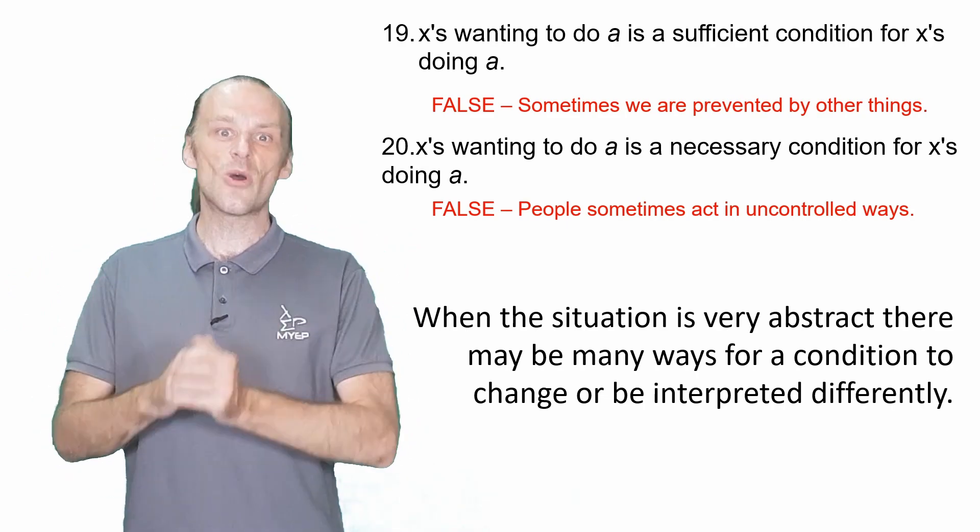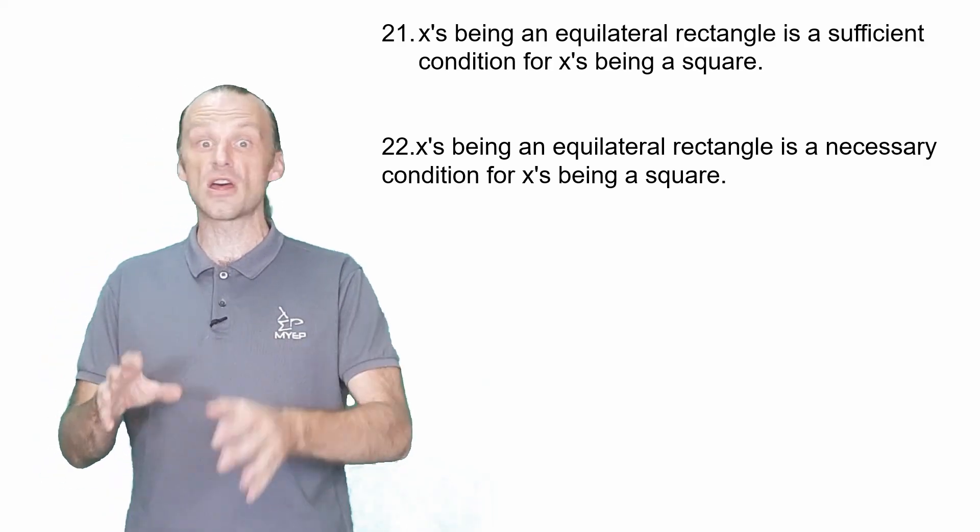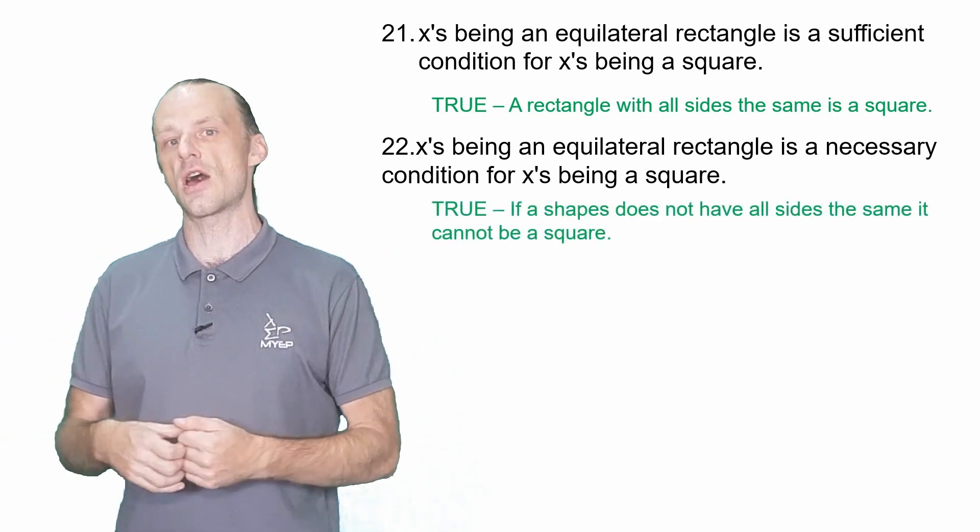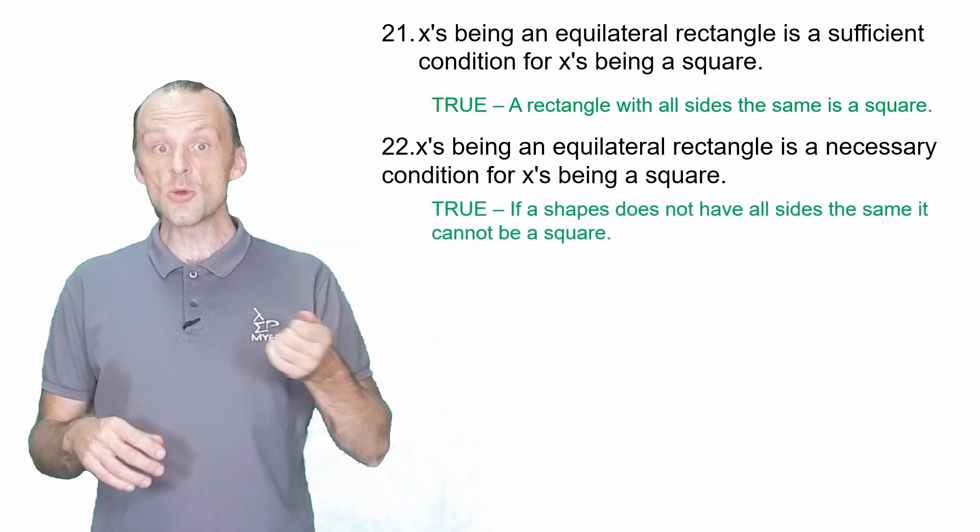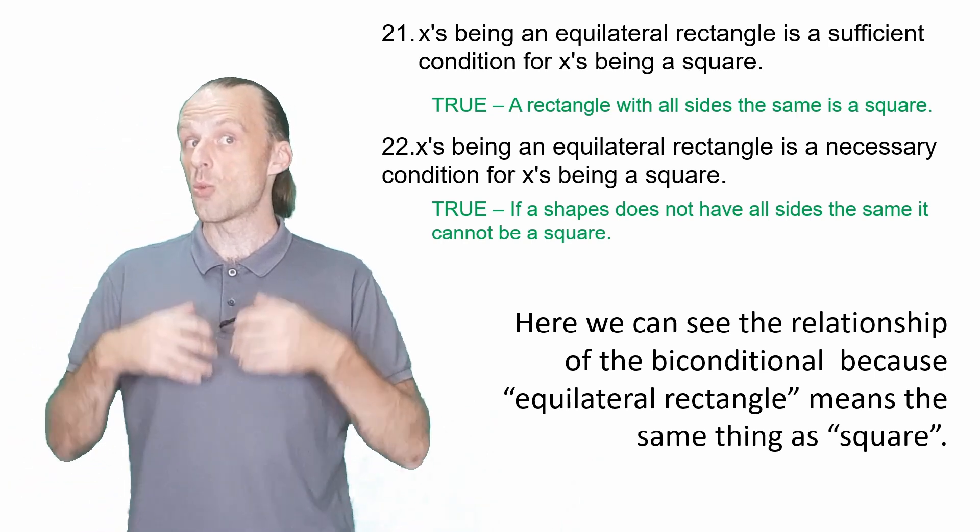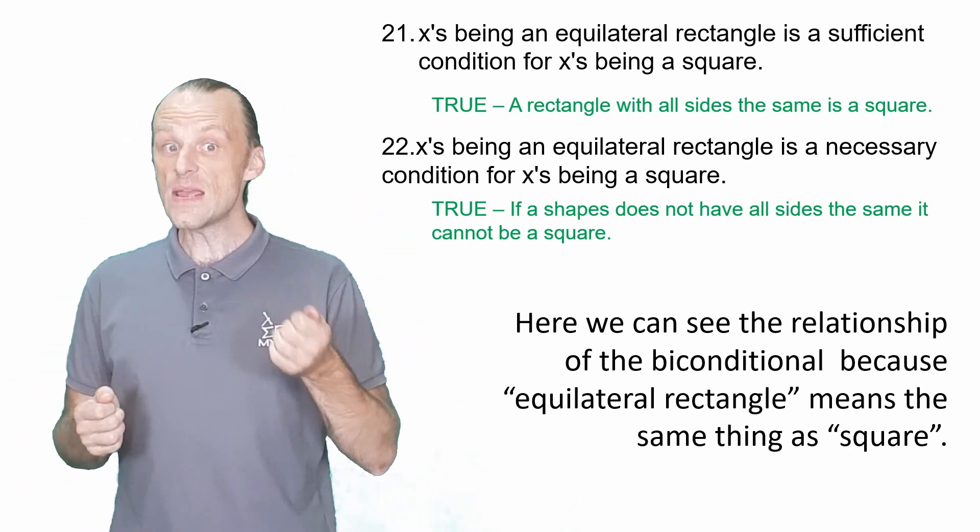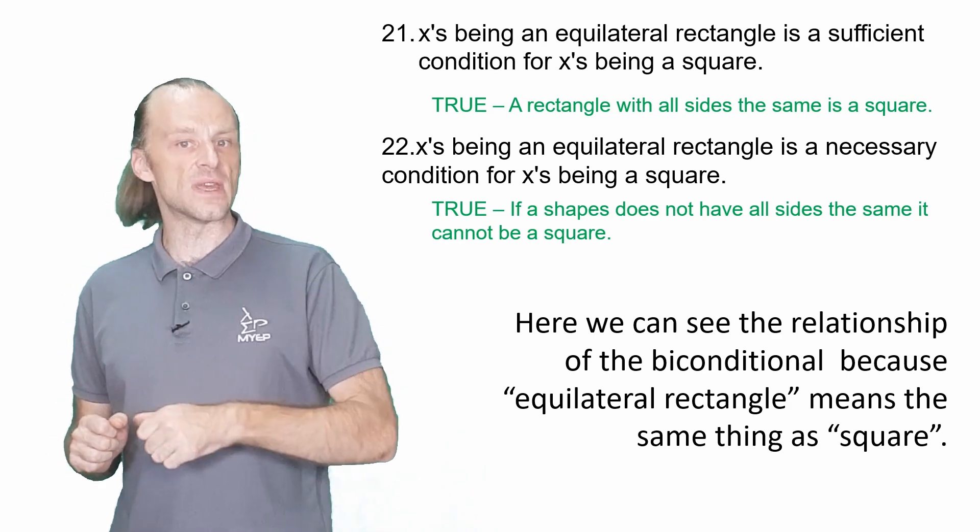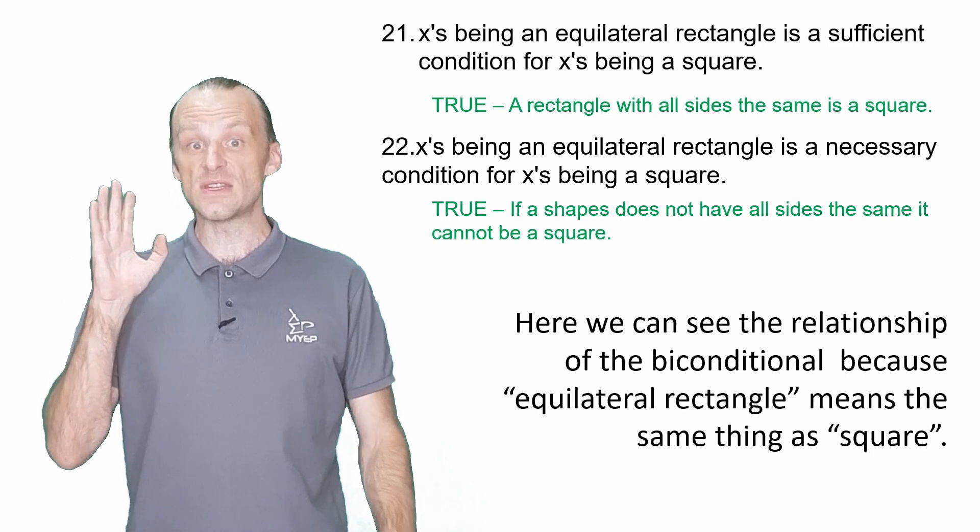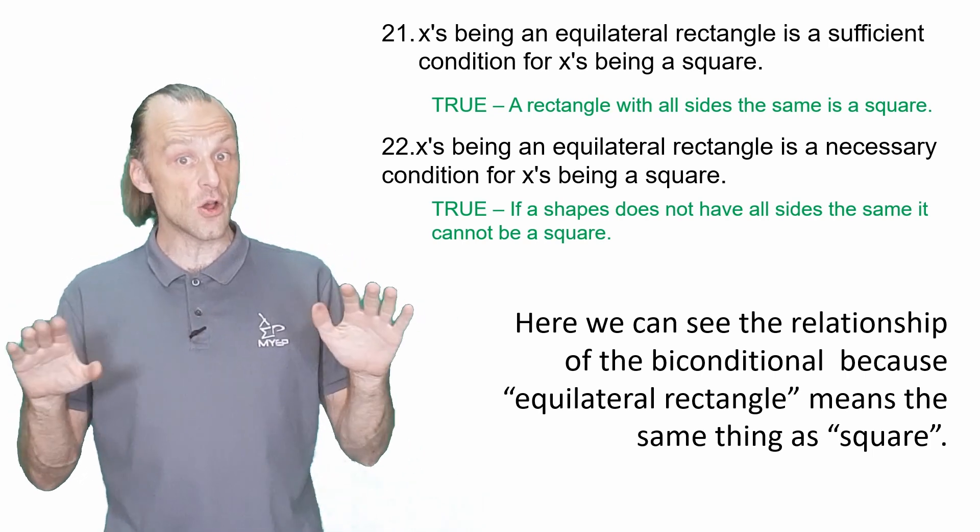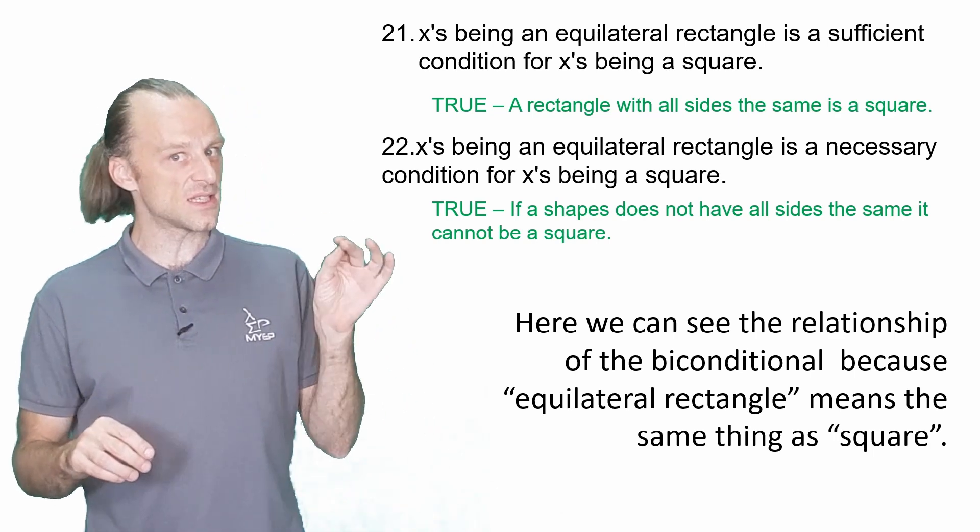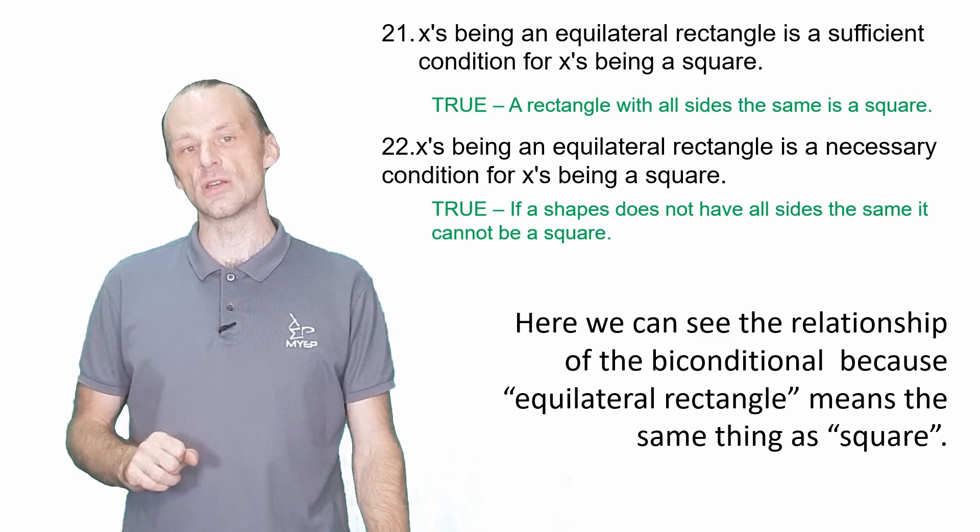Finally, 21 and 22 are both true. This is an example of a biconditional definition in action because A and B imply each other. In 21, an equilateral rectangle is a rectangle where all sides are the same length, which is a square. So A being true guarantees that B is true. It is a sufficient condition. In 22, if a shape is not an equilateral rectangle, then it cannot be a square. A being false guarantees that B is false. So it is a necessary condition too.